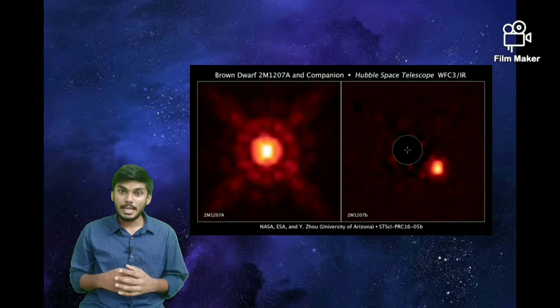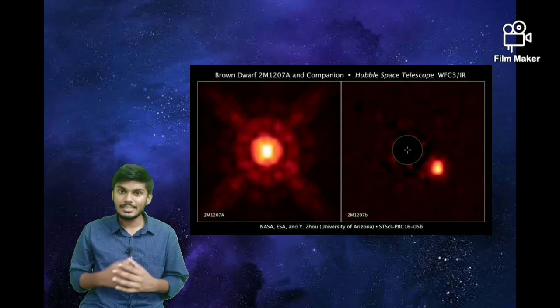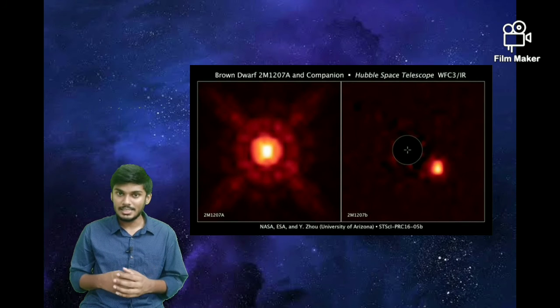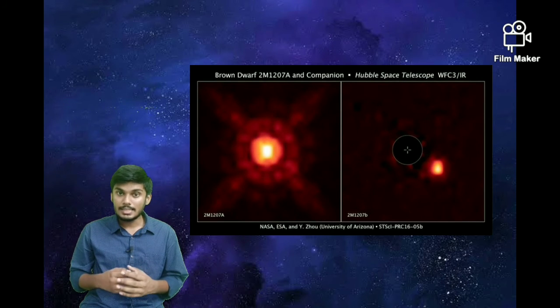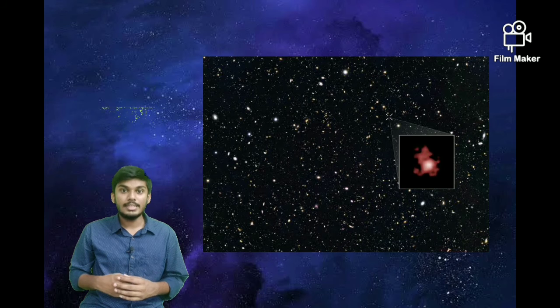It has also observed the planets which are revolving around other star systems, which are known as exoplanets. Another important thing is that Hubble has also observed galaxies which are 13.4 billion light-years approximately from Earth. This means it has observed 13.4 billion years back into time.